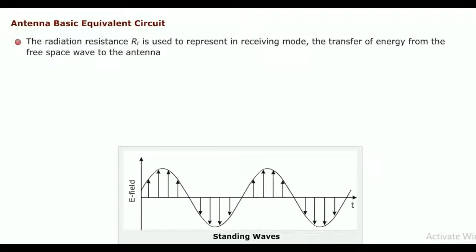The radiation resistance RR is used to represent, in receiving mode, the transfer of energy from the free space wave to the antenna. Thus the antenna serves as a directional device in addition to the probing device.